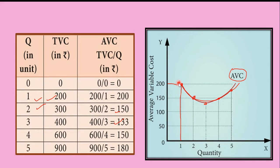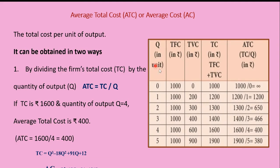To repeat the characteristics: AVC declines initially and then increases with an increase in output. AVC declines up to a point and then moves upwards steeply due to the law of returns. The AVC curve is a U-shaped curve.